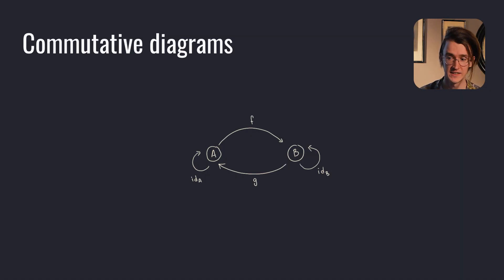Standard mathematical notation isn't the easiest to understand. When it comes to equations and laws of category theory, commutative diagrams are a different way to represent categories and their relationships. For example, a category C with objects A and B and morphisms F from A to B and G from B to A can be drawn like this.